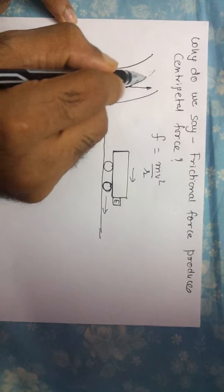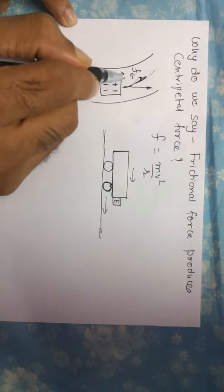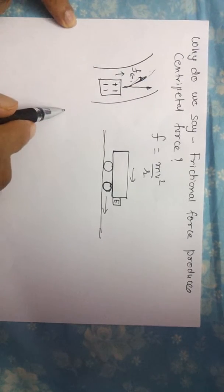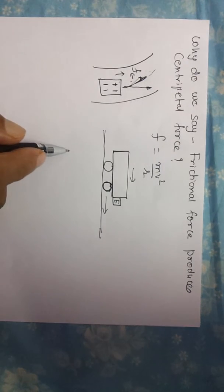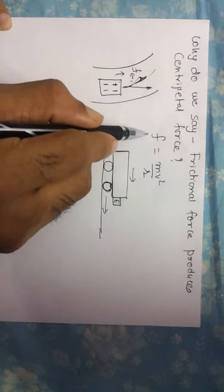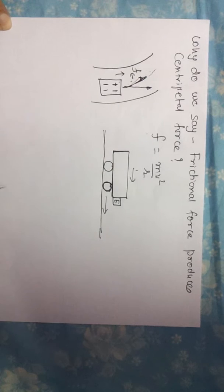This turning happens because of the friction force acting between the wheels and the road. I hope this short video helps you understand why we generally take friction force equals mv squared by r. Thank you.